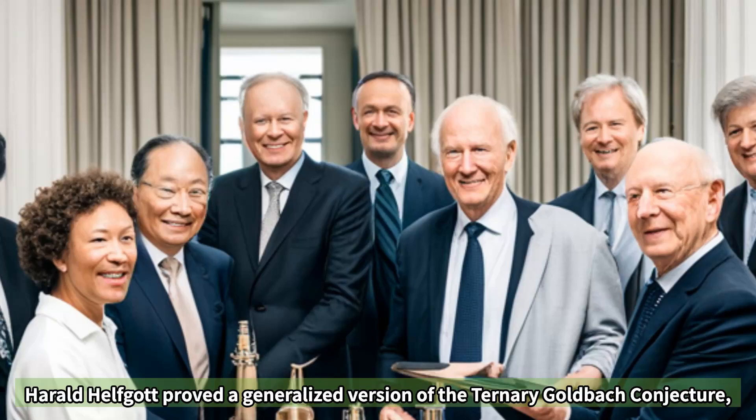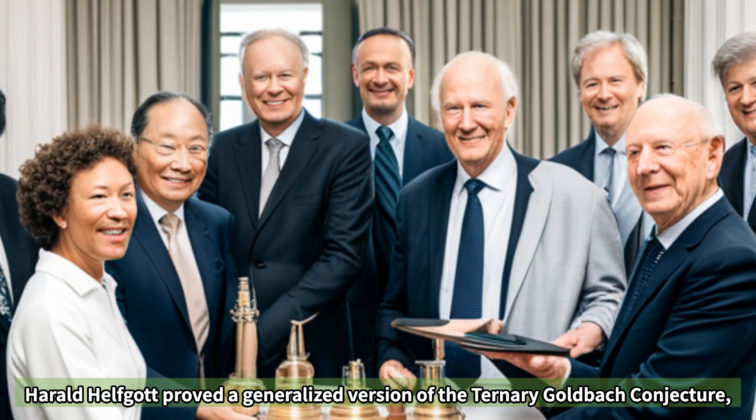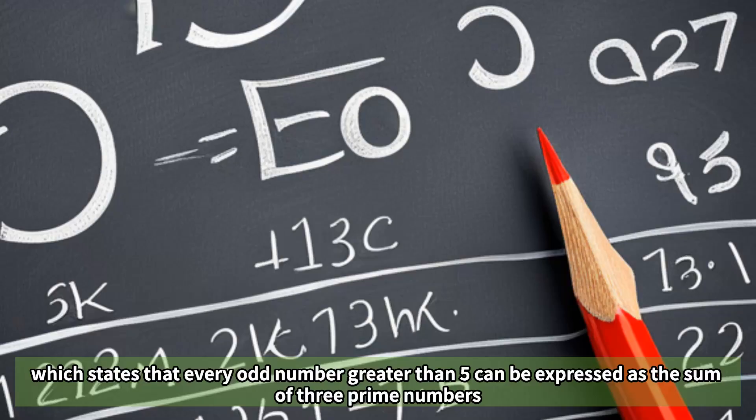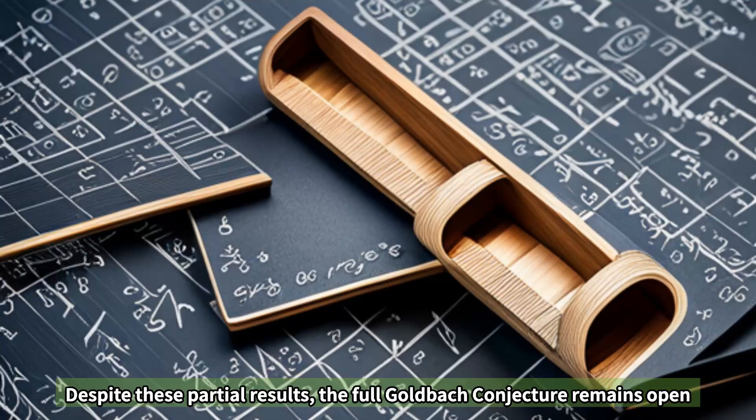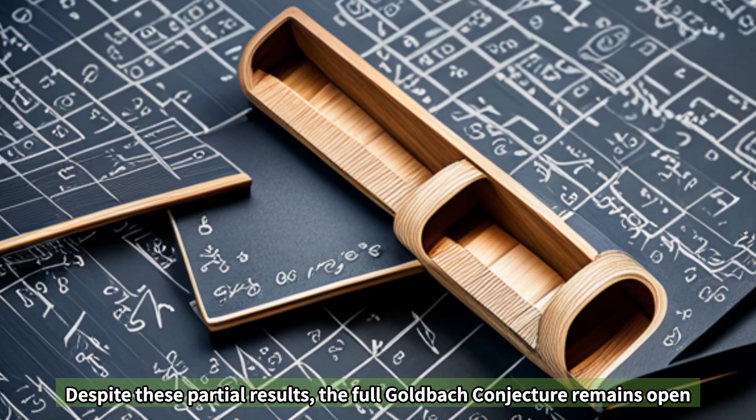More recently, the Peruvian mathematician Harold Helfgott proved a generalized version of the Ternary Goldbach conjecture, which states that every odd number greater than five can be expressed as the sum of three prime numbers. Despite these partial results, the full Goldbach conjecture remains open.